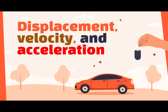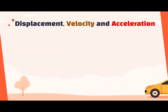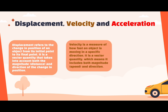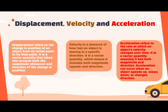Displacement, Velocity, and Acceleration. What is displacement exactly? Displacement is the shortest distance between two positions and has a direction. Velocity, on the other hand, refers to the speed and direction of an object. And lastly, acceleration is the rate of change of velocity per unit time. Imagine yourself increasing your speed while driving — that is basically acceleration.